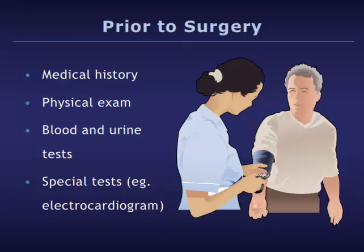Prior to undergoing TURP, you will undergo a medical interview or history as well as a physical exam. You may have blood and urine tests performed, along with other tests as needed, such as an electrocardiogram, which is a heart test.